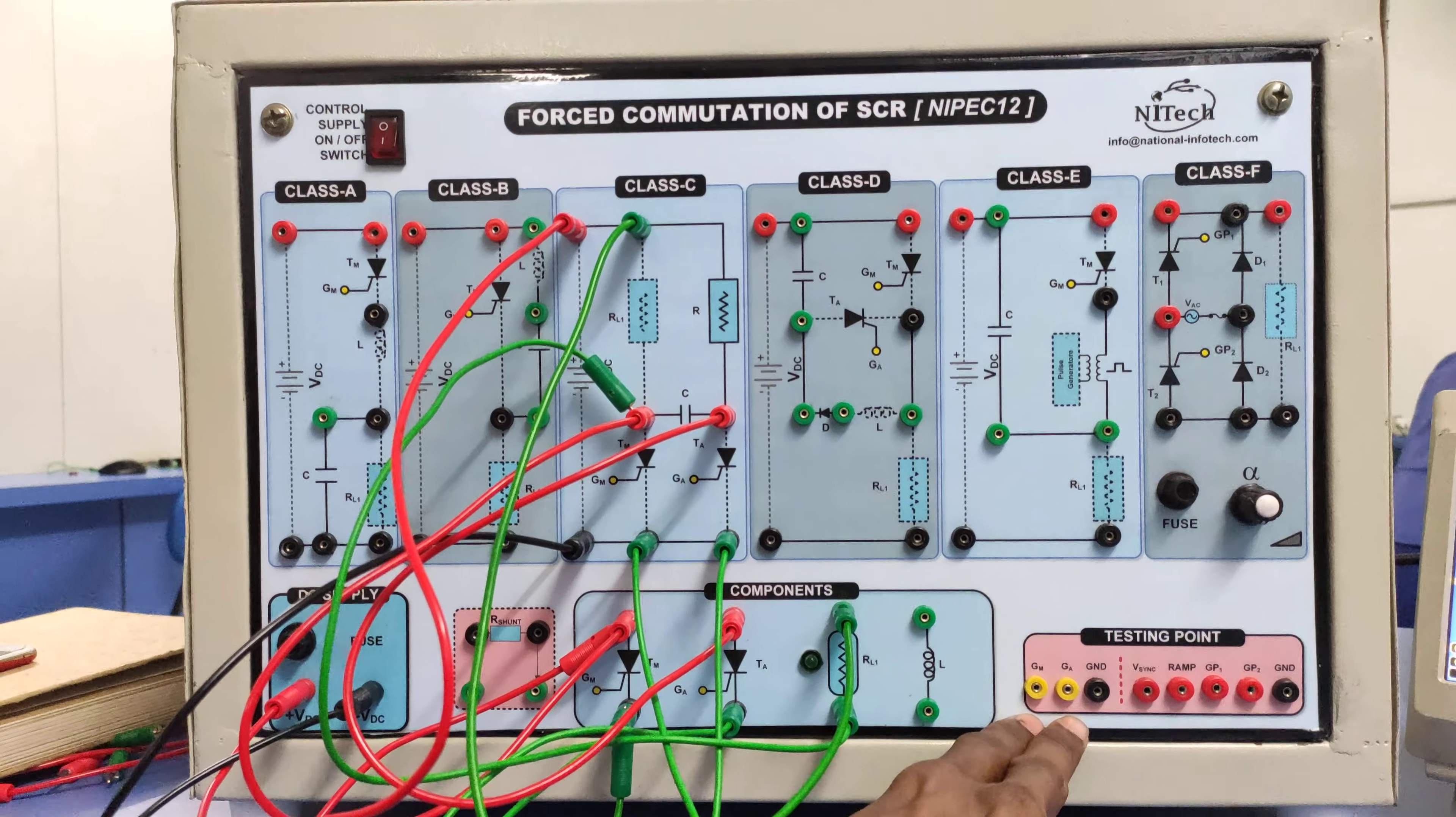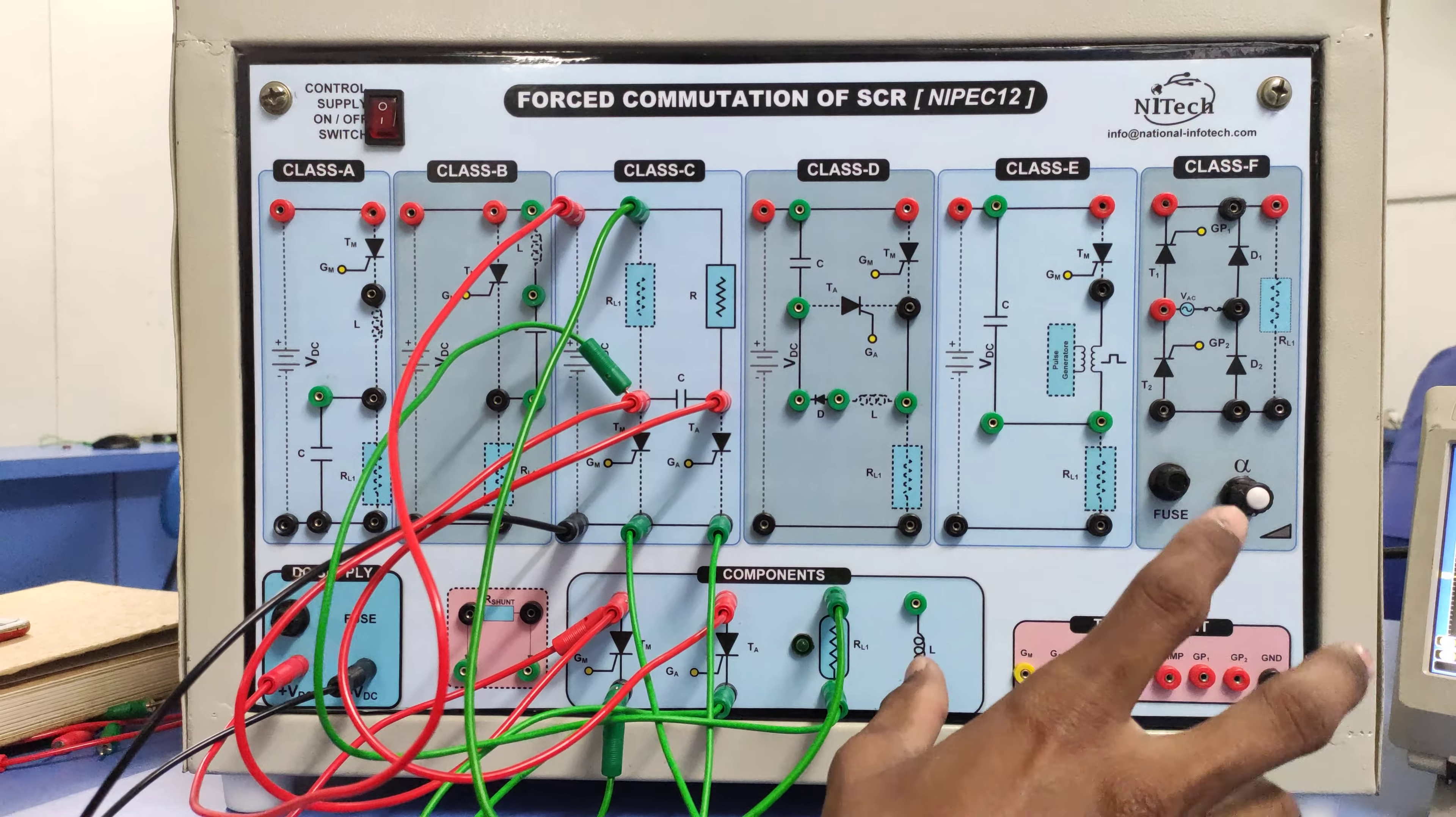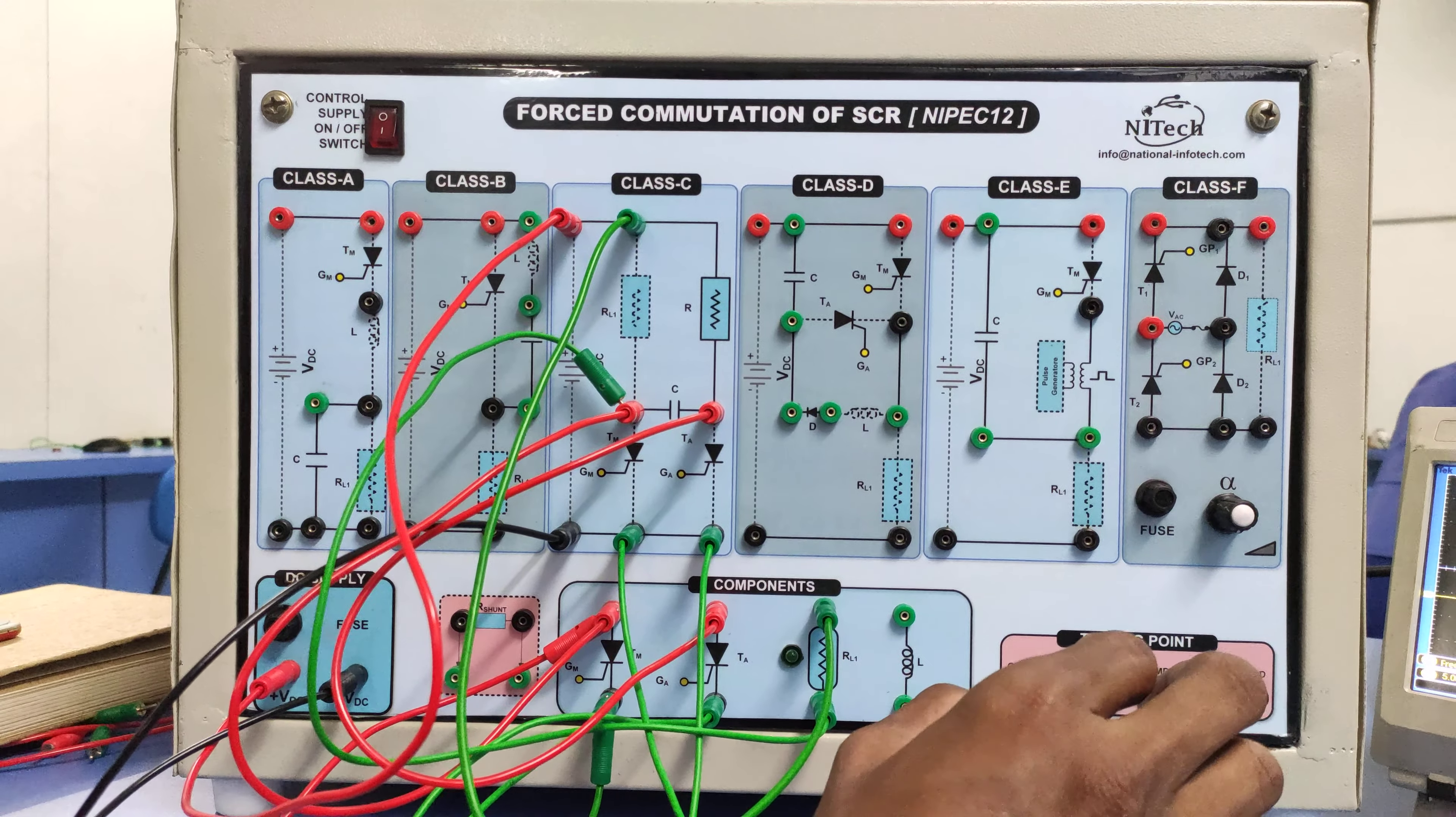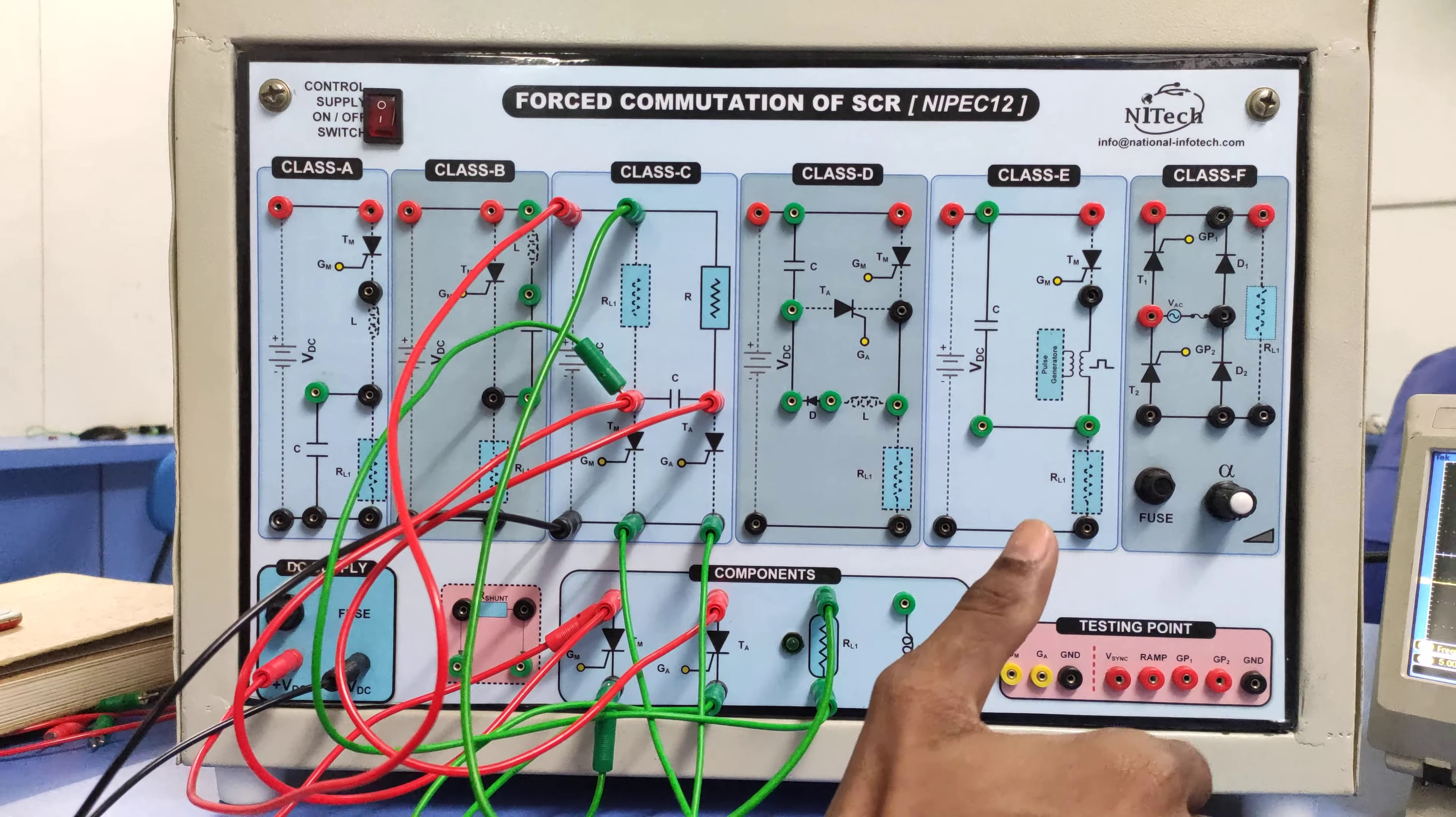But I am very much interested to see the thyristor across voltage because, as per the waveform of thyristor across voltage, you can take the judgment of commutation. How we are getting commutation, are we getting the commutation of thyristor?